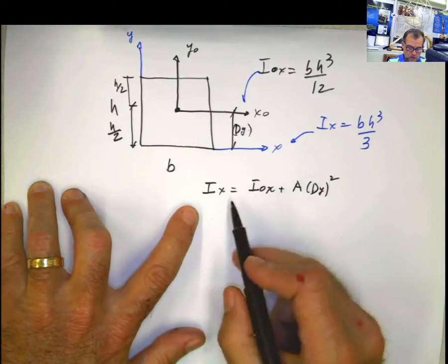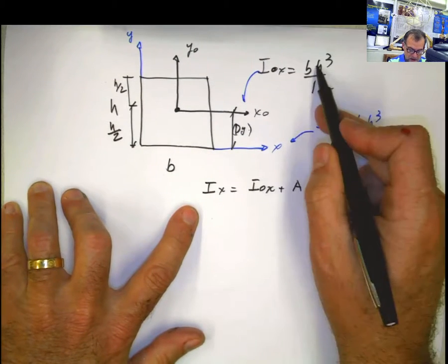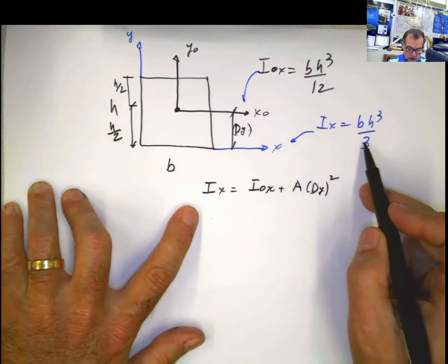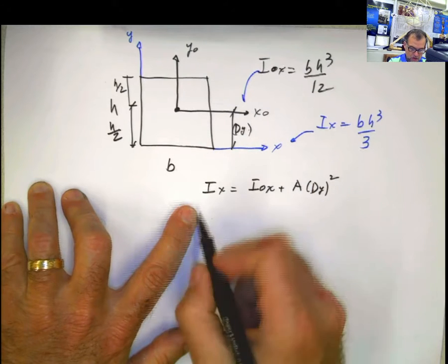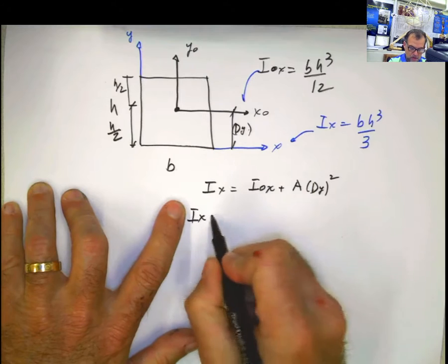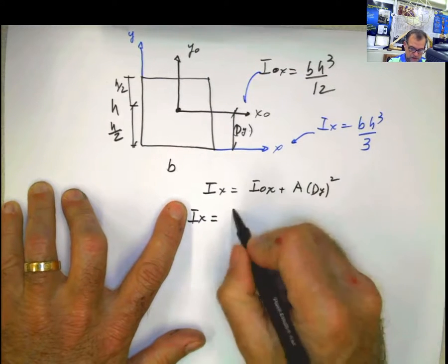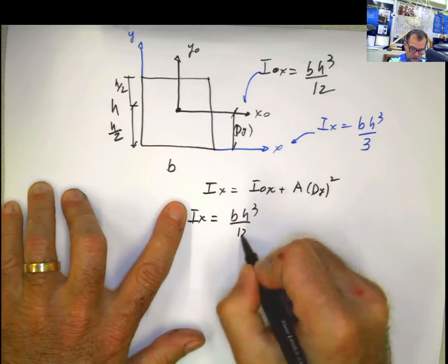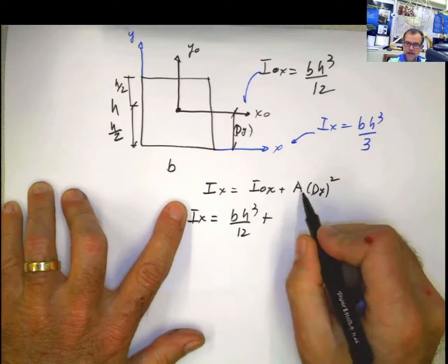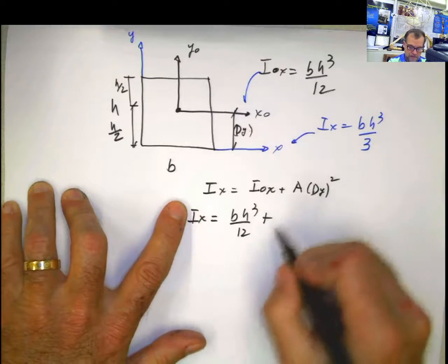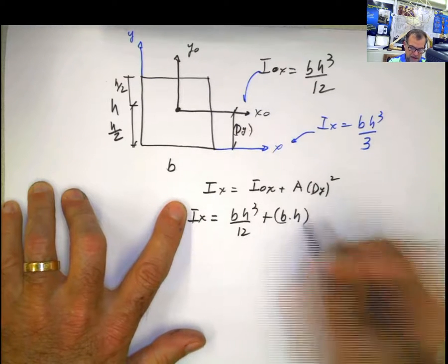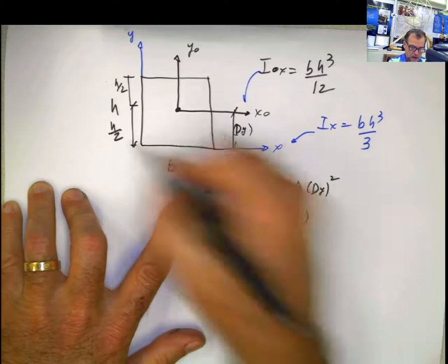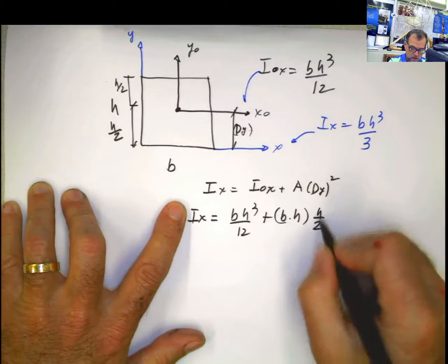The only thing that we have to do if we have this and we can convert it into that one, is just apply this equation. So let's see how it works. I sub x equals I sub 0x, which is bh cubed divided by 12, plus A. What is the A? The area of that rectangle, b times h.